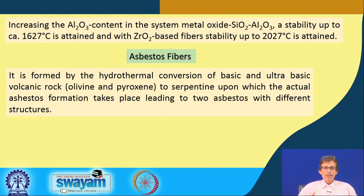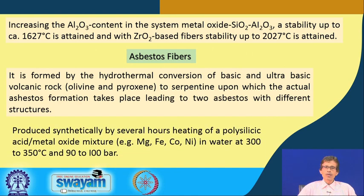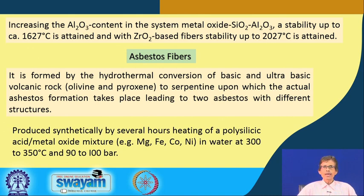The conversion already takes place as the volcanic rock cools down, and one form can be separated into two other forms having two different structures. When they are structurally different, we get two different types of asbestos systems or asbestos molecules. Knowing that it can be formed from volcanic rock - mainly olivine and pyroxene - we can produce this synthetically by several hours of heating, at very high temperature mimicking your hydrothermal reaction, so that we can think of a corresponding hydrothermal conversion.